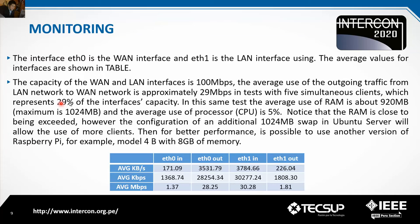The average use of outgoing traffic from the LAN network to the WAN network is about 29 megabits per second, which represents 29% of the interface's capacity. In the same test, the average RAM usage is about 920 megabytes — the maximum is 1024 megabytes — and the average CPU usage is 5%. Configuring an additional 1024 megabytes of swap in Ubuntu Server will allow the use of more clients. For better performance, it is possible to use Raspberry Pi 4B with 8 gigabytes of memory.